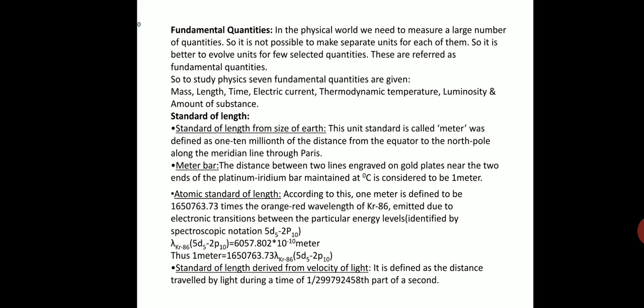To understand luminous intensity, imagine two bulbs — one dim and one bright. The second one is more luminous than the first. Luminous intensity is the total electromagnetic energy emitted from a body per unit time. In simpler terms, whatever amount of light is emitted from a body per unit time — the bright bulb emits more energy than the dim bulb, so it is more luminous.